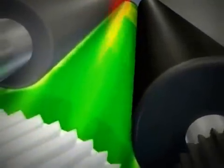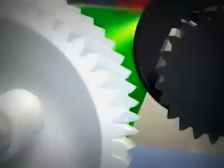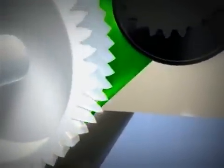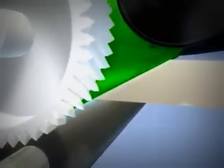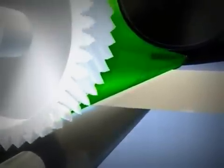As the developer roll and photoconductor drum come into contact, the negatively charged toner is attracted to the discharged areas of the drum. When the paper passes under the drum, the transfer roller applies a slight electrical charge, causing the toner to move from the drum to the paper.